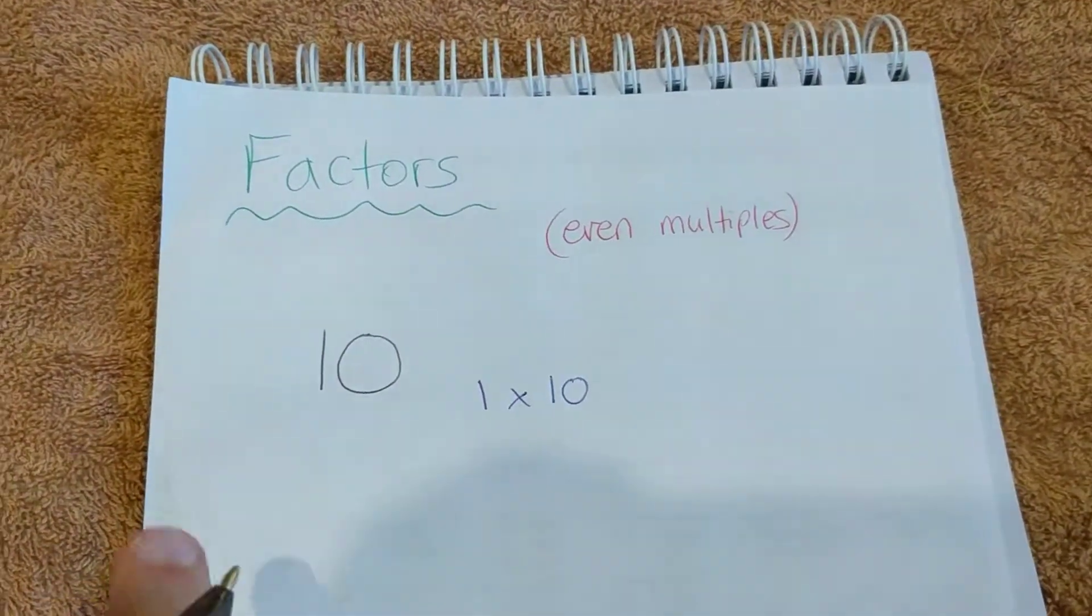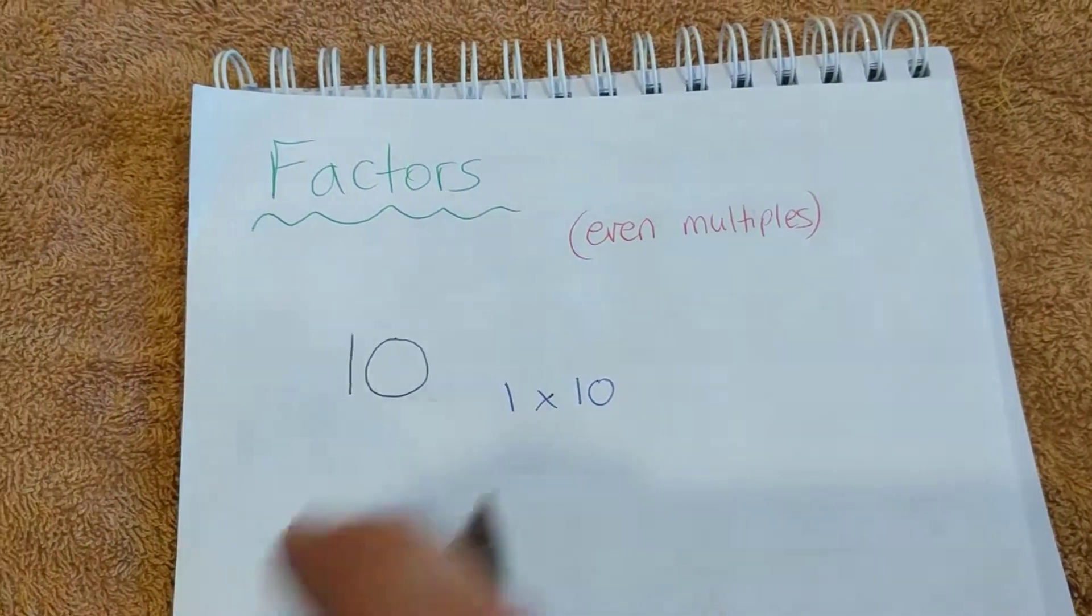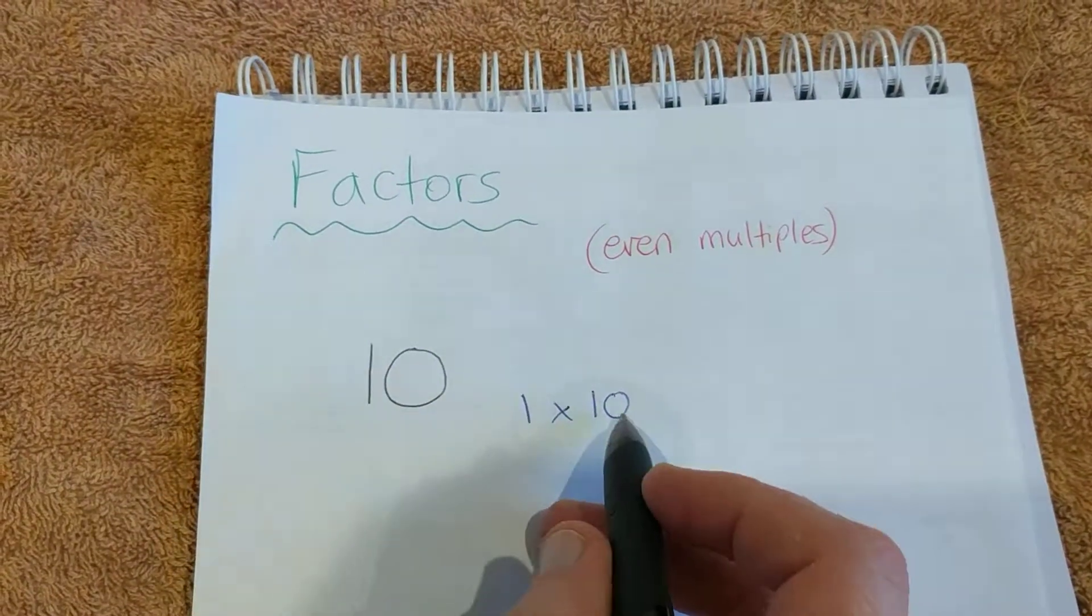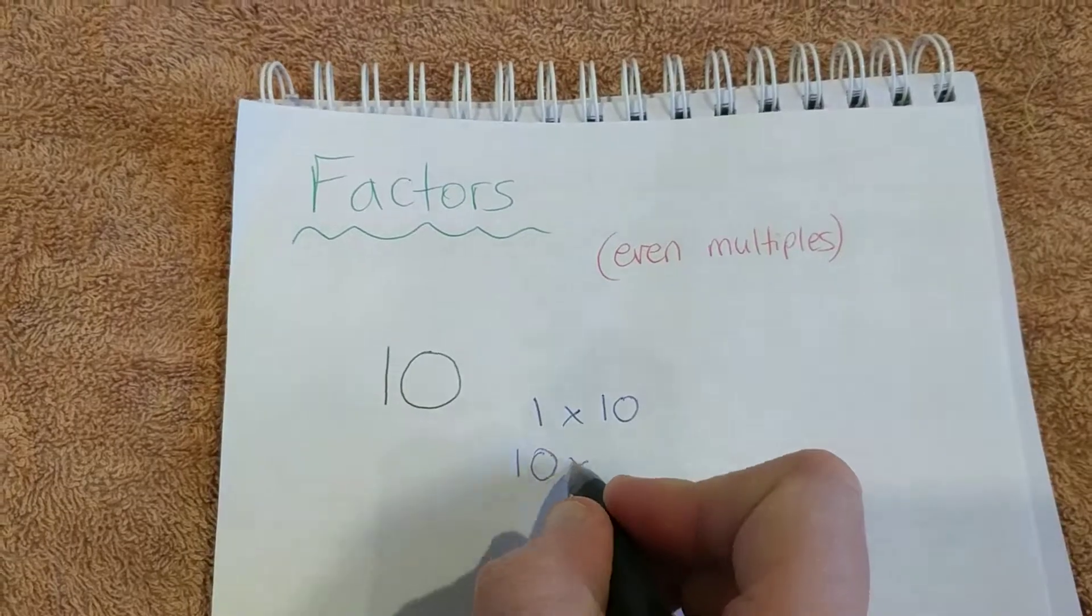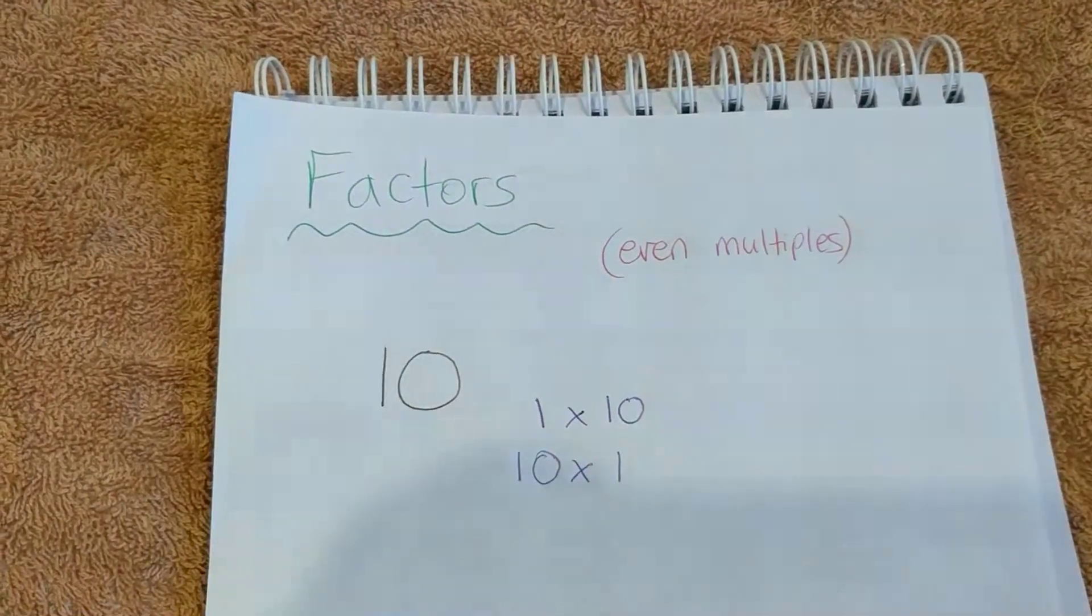So 1 is a factor because it goes into 10 ten times, and therefore 10 is a factor because 10 goes into 10 one time. So we've already found two factors for 10.